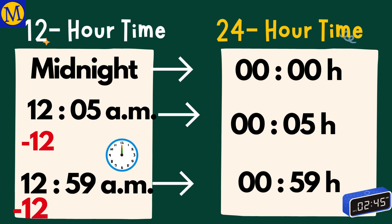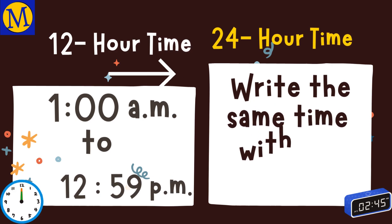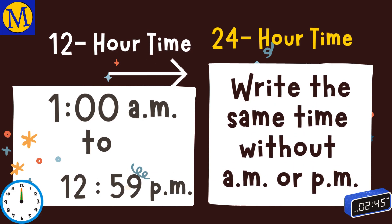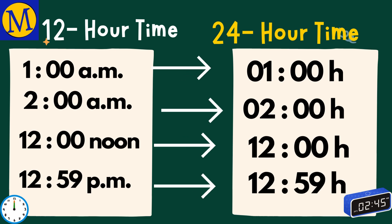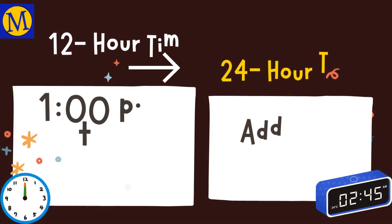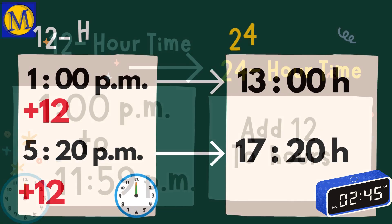1 a.m. to 12:59 p.m. is written as it is, without a.m. or p.m. The time from 1 p.m. to 11:59 p.m. is changed to 24-hour time by adding 12 to the hours. So 1 p.m. becomes 1300H.